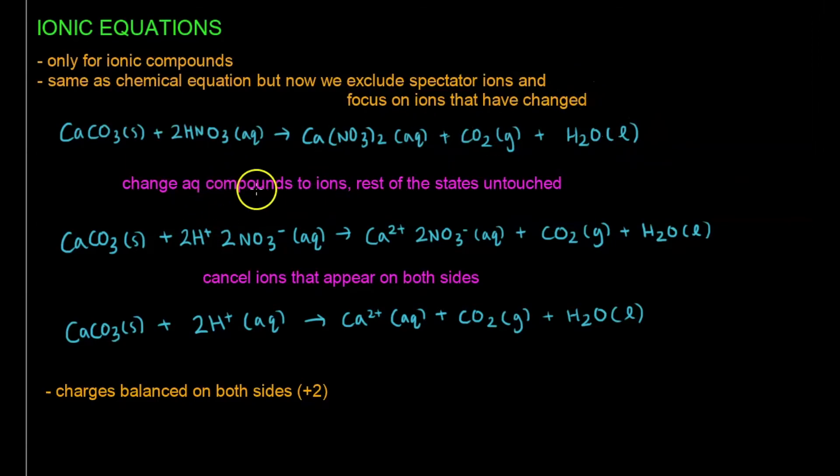The first rule is to change all the aqueous compounds to ions. So you can see that these are my aqueous compounds, because there's AQ here. And I know that this number in front, I have to give it to everybody, so I have to give it to H and to NO3, because this is H+, this is NO3-, this is Ca2+, this is NO3-.